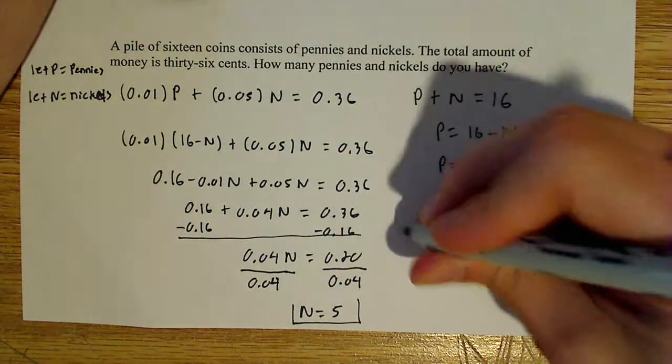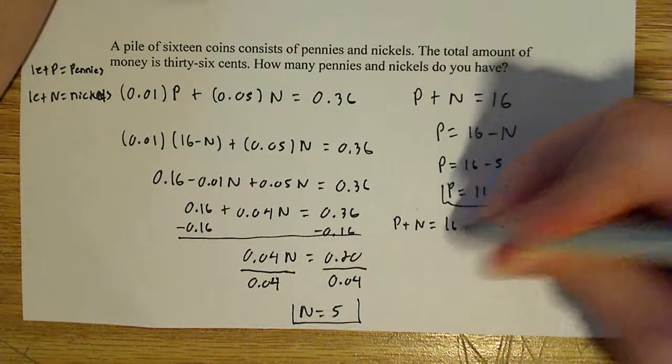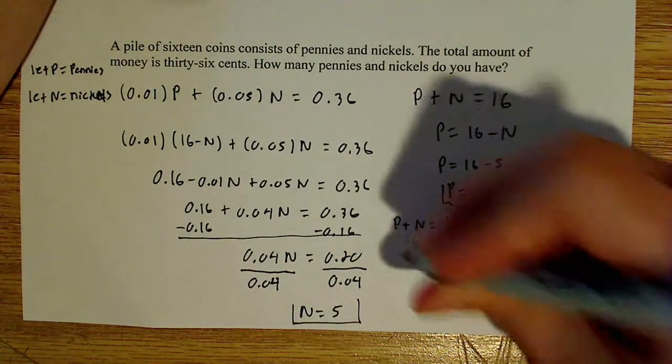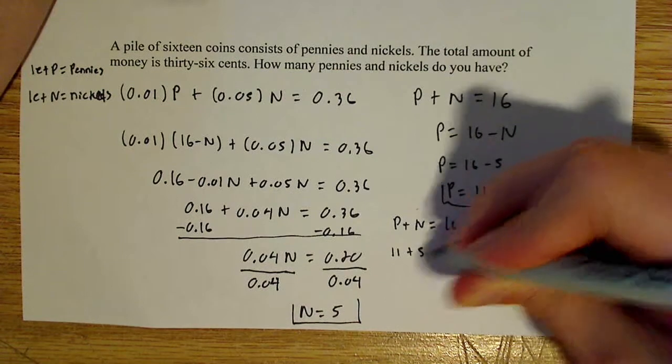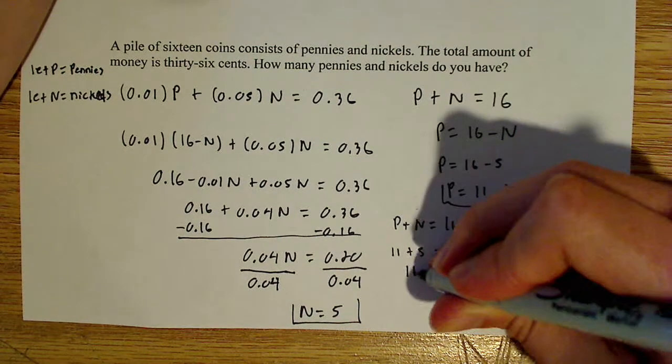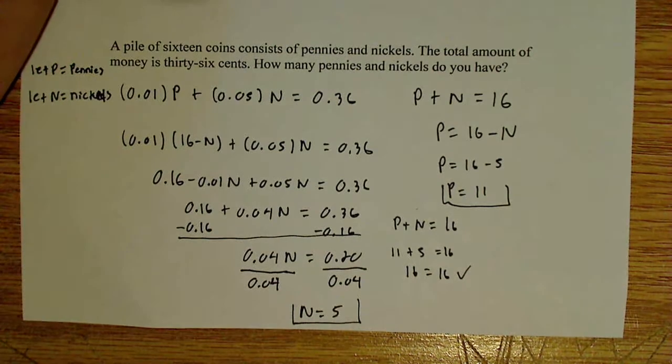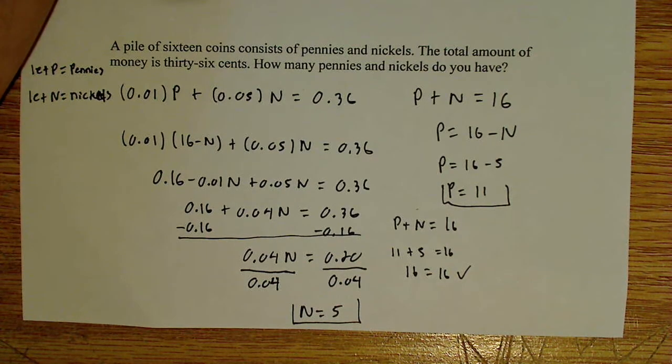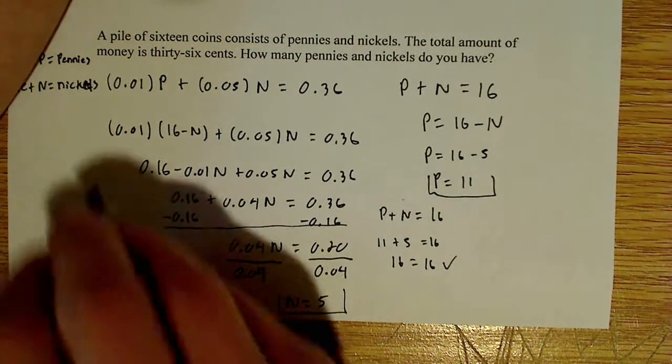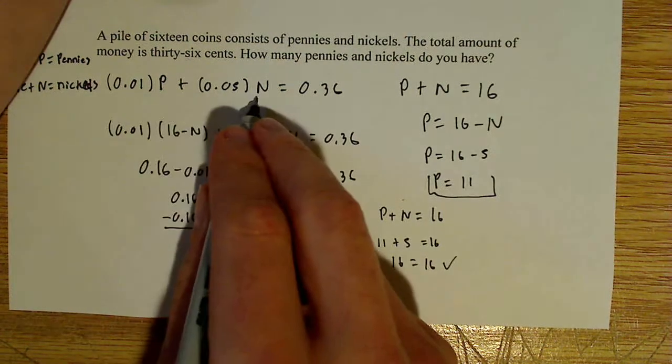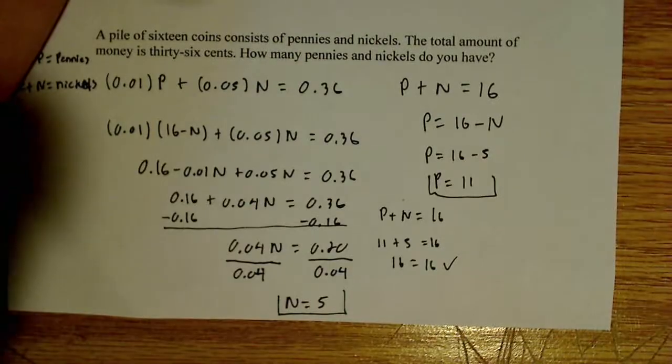Now to check it, we can do two things. P plus N equals 16. So N is 5, P is 11. So 11 plus 5 is equal to 16. 16 equals 16. So that part checks out. Now we can also check it by plugging back in the numbers for P and N up here, and seeing if that works out.